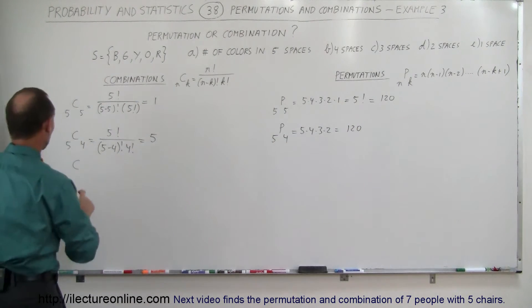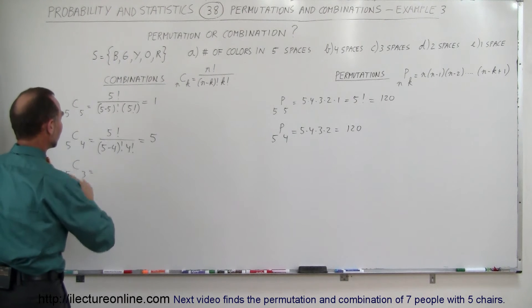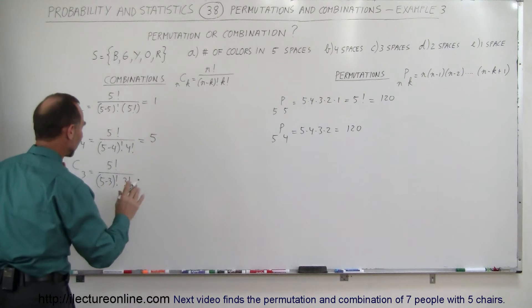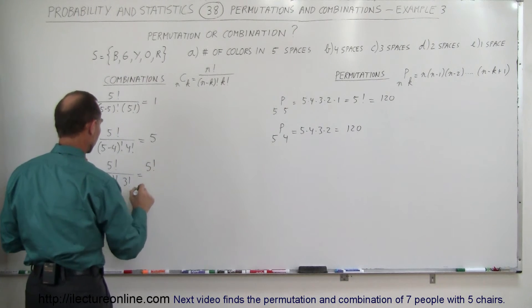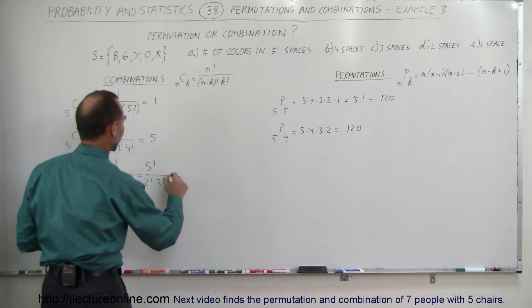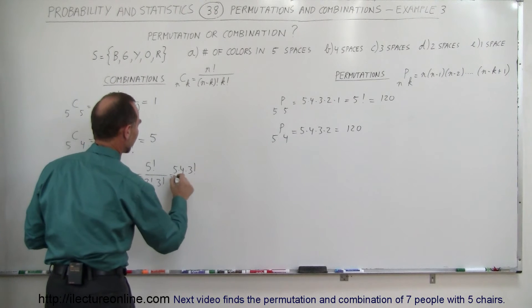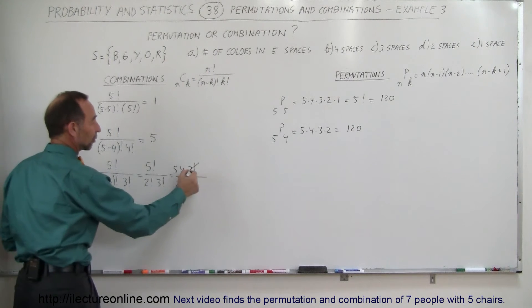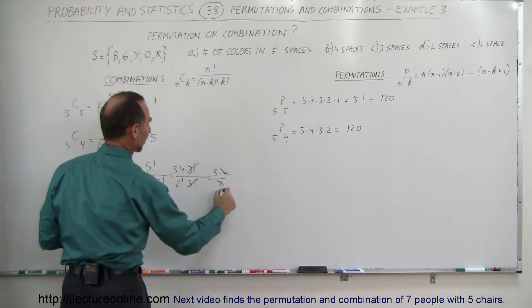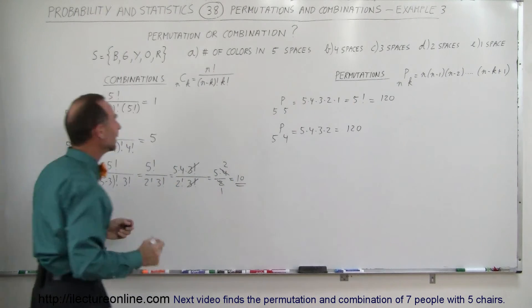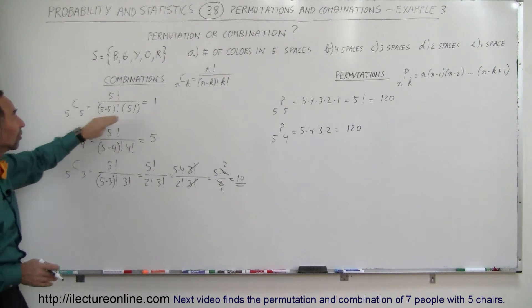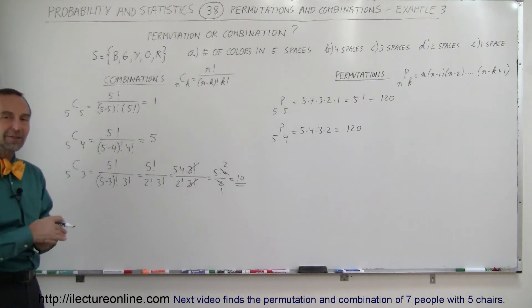Now for three spaces: the number of combinations C(5,3) equals five factorial divided by (five minus three) factorial times three factorial, which simplifies to five factorial divided by two factorial times three factorial. This equals five times four times three factorial divided by two factorial times three factorial. The three factorials cancel out, leaving five times four divided by two — the four and two cancel to give two — so we have ten combinations with five colors and three spaces.